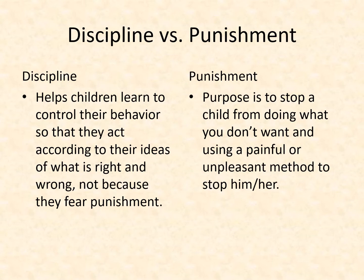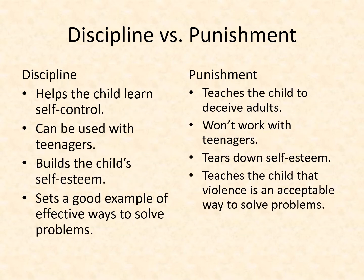As we considered discipline versus punishment, we said discipline is definitely the way to go, because punishment is trying to stop a child from doing something right then and there using some unpleasant or painful manner. Discipline, on the other hand, helps children learn to control their own behavior so they act according to what's right and wrong, not because of the fear of punishment. Discipline works because we help the child learn self-control, is appropriate for adolescents, and builds self-esteem. Punishment does not work well with adolescents — it teaches children to deceive adults, tears down self-esteem, and models that violence is an acceptable way to solve problems.